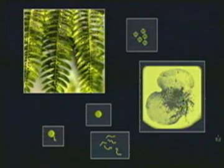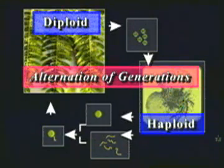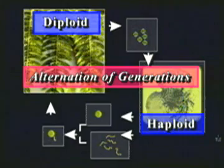Reproduction that requires alternating diploid and haploid generations is known as the alternation of generations, and is typical of all plants.